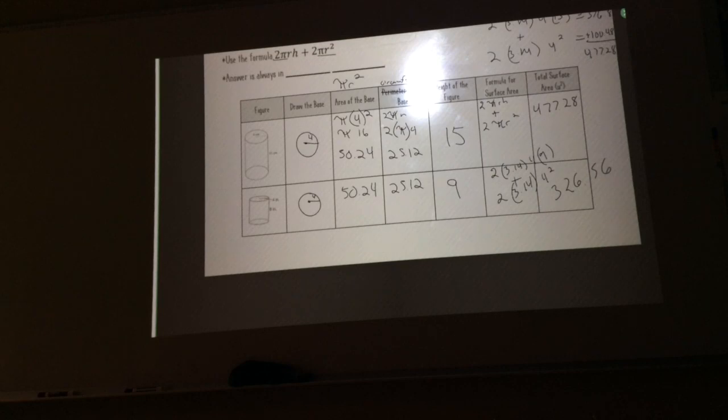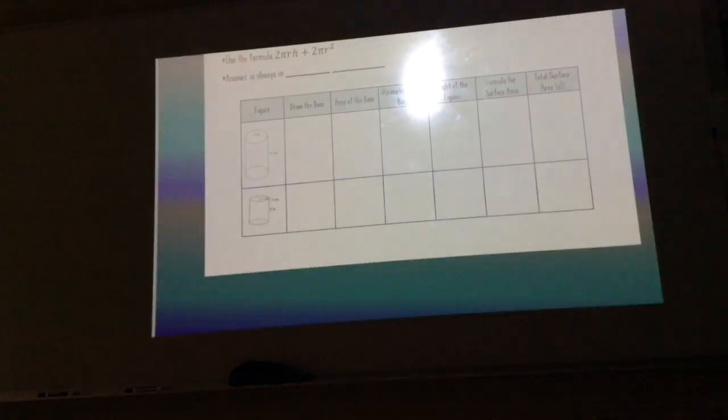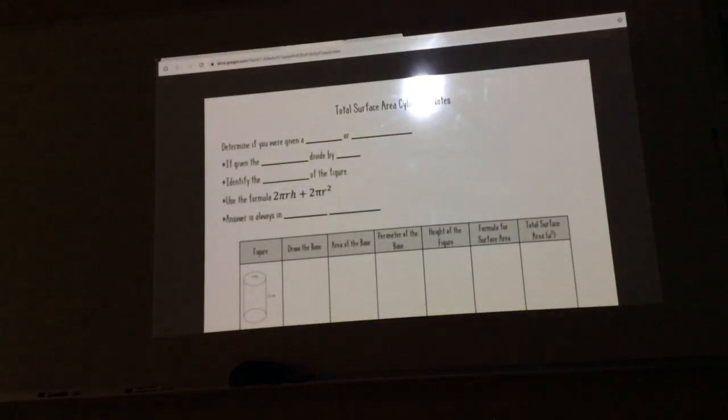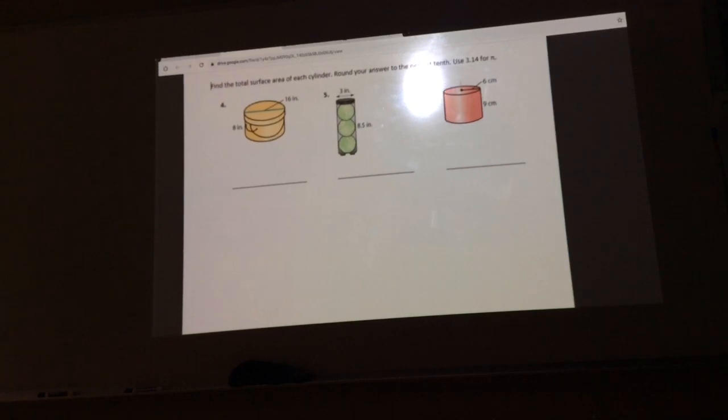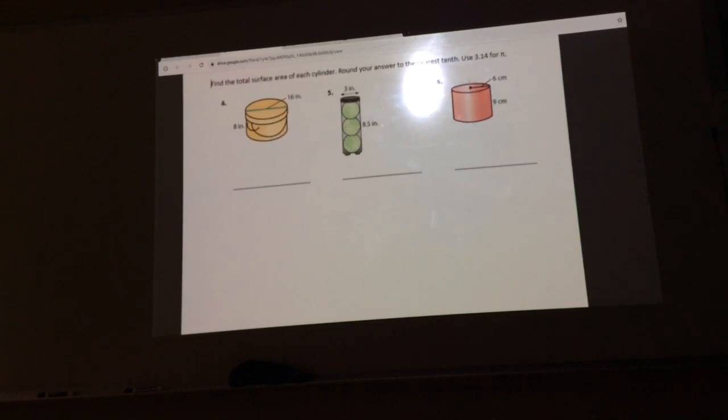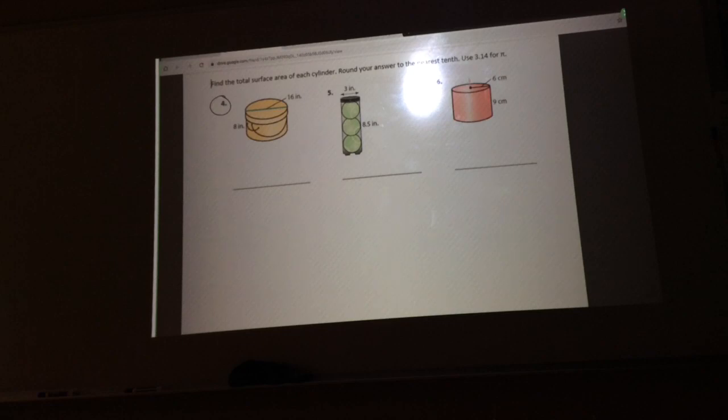All right, I'm going to go ahead and jump into our next page, and this is going to be where we actually put it all together. Try to get away from the step-by-step piece. Now you saw these pictures yesterday, but this time we're looking at them from a total surface area, not just lateral. So here's your formula: it's 2πrh plus 2πr². All right, it's all number four for me. I'm giving you all the pieces you need; all you gotta do is solve it.